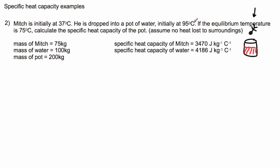The water is at 95 degrees Celsius and Mitch is at 37. This time we're given that the equilibrium temperature is 75. What's the specific heat capacity of the pot? We're going to again assume that no heat is lost to the surroundings. This time we have three different materials.